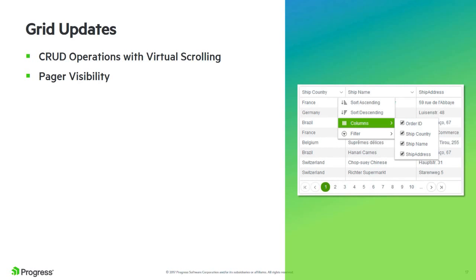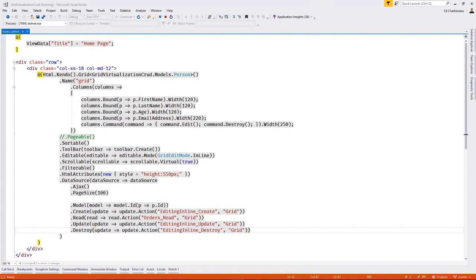Everyone's favorite control, the grid, is more powerful than ever with this release. Virtual scrolling is a popular feature that enables a scroll bar to quickly skip through pages of data. Virtualization only loads enough data to satisfy the current view, allowing users to work with massive data sets. Since virtual scrolling only loads data visible on the page, performance remains optimal even under heavy loads. Before this release, this popular feature could only be used with read-only scenarios; however, due to customer feedback we now support CRUD operations with virtual scrolling enabled. Let's jump into Visual Studio to see how to use create, read, update, and delete with virtual scrolling.